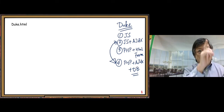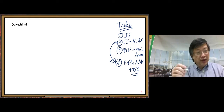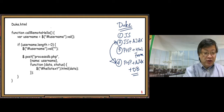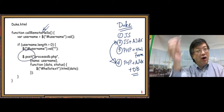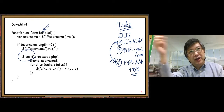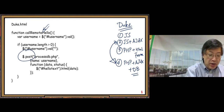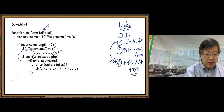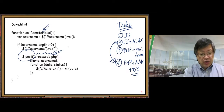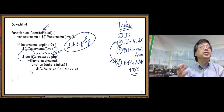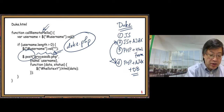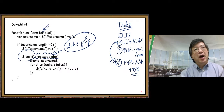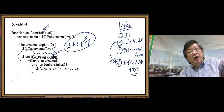I only make one small change. In the original version 2 example, in the JavaScript function, we use jQuery to call the backend PHP processing file. I only change the name of that backend PHP processing file. The original version uses Duke.php, but this one — because we need to do the database part — we need a new PHP file. So I call it processdb.php.